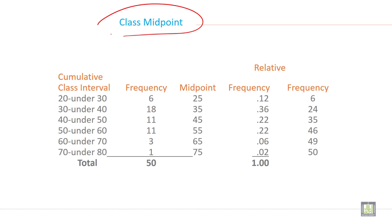Midpoint. What is midpoint? It is the average of lower limit and upper limit of individual class. Lower limit of this class is 20 and upper limit is 30. When you make average it is 25. 20 plus 30 divided by 2 is 25. So 30 plus 40 divided by 2 it is 35. 40 plus 50 divided by 2 it is 45, and continue.